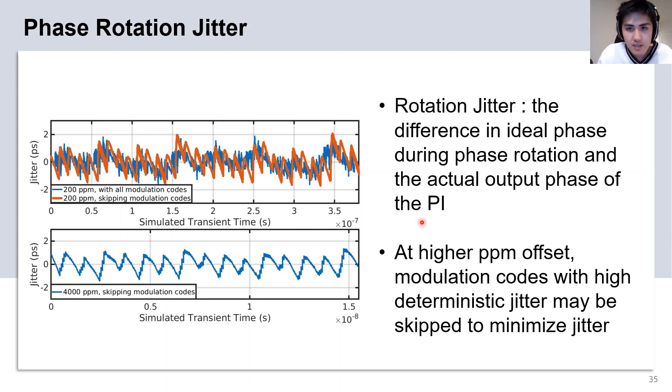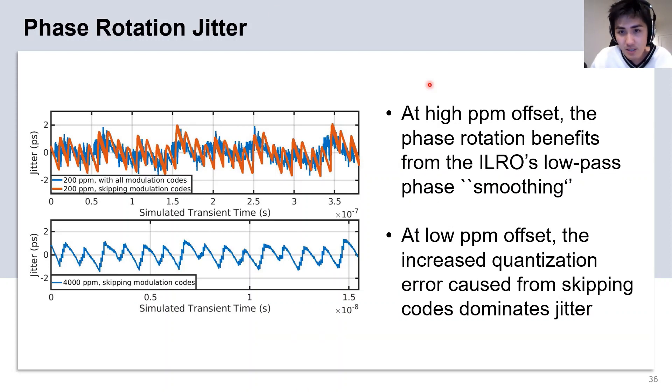The rotation jitter is plotted on the left here over different modulation schemes. At higher ppm offsets, modulation codes with high deterministic jitter such as the 00001 codes can be skipped to minimize jitter. This is because at high ppm frequency offsets, the phase rotation benefits from the ILO's low-pass phase smoothing property, which filters out more of the high-frequency phase noise.